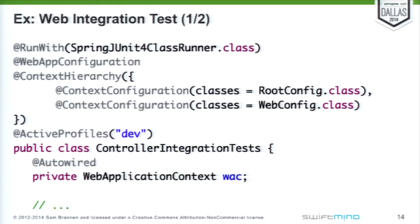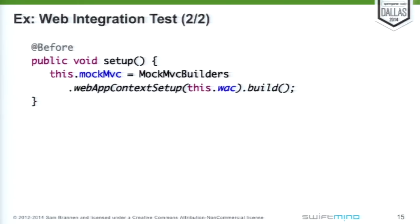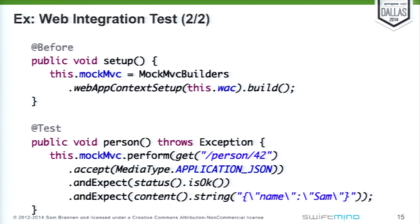Within your test class, you can have the web application context auto-wired in. This creates two application contexts — a parent and a child — and the one injected into the test is the child context. Since we have @WebAppConfig, this is a web application context. Using that, we can make use of the Spring MVC test framework by creating a MockMvc field, and then in a @Before method, we configure it using MockMvcBuilders.webAppContextSetup with the injected web application context, then invoking build.